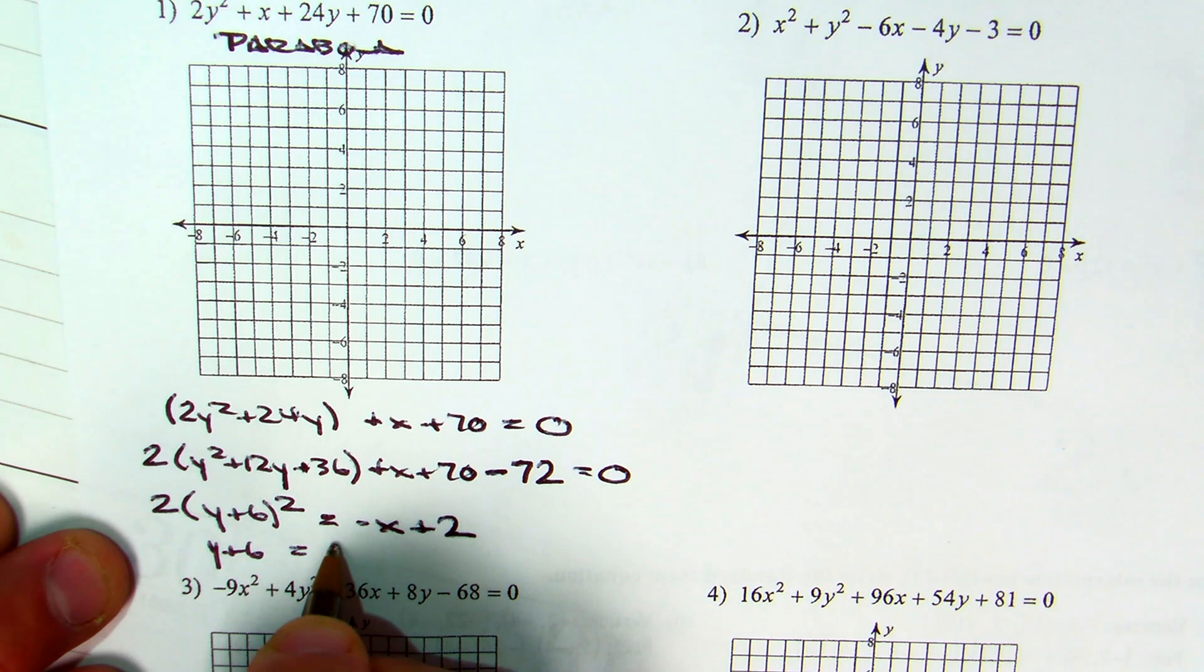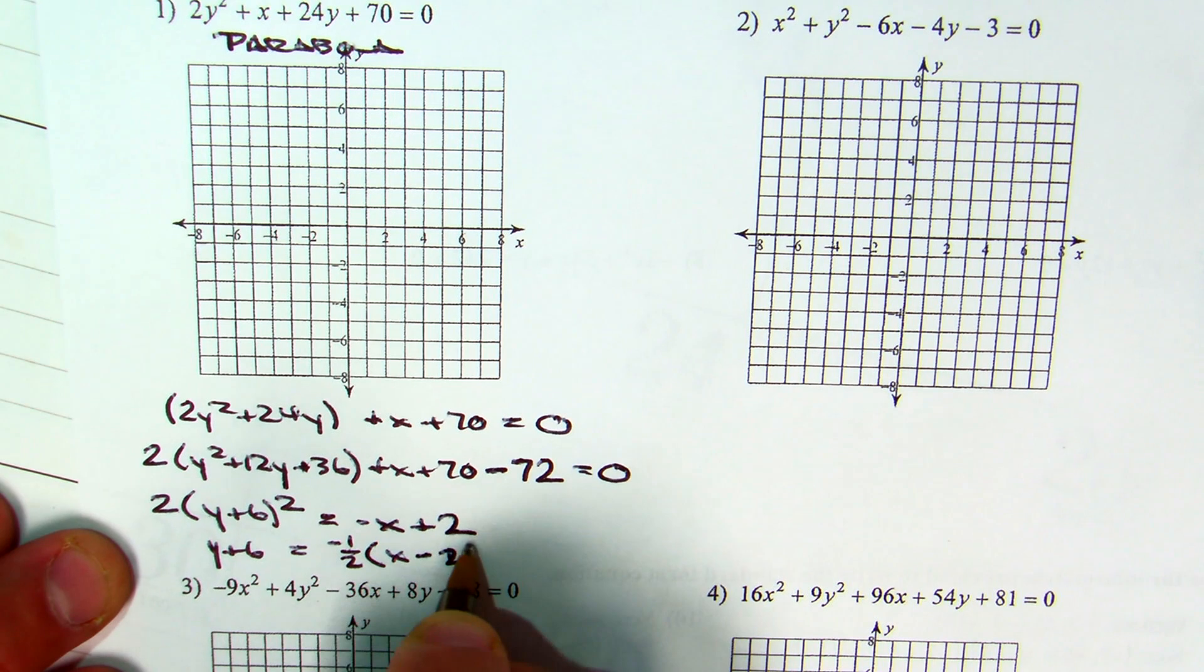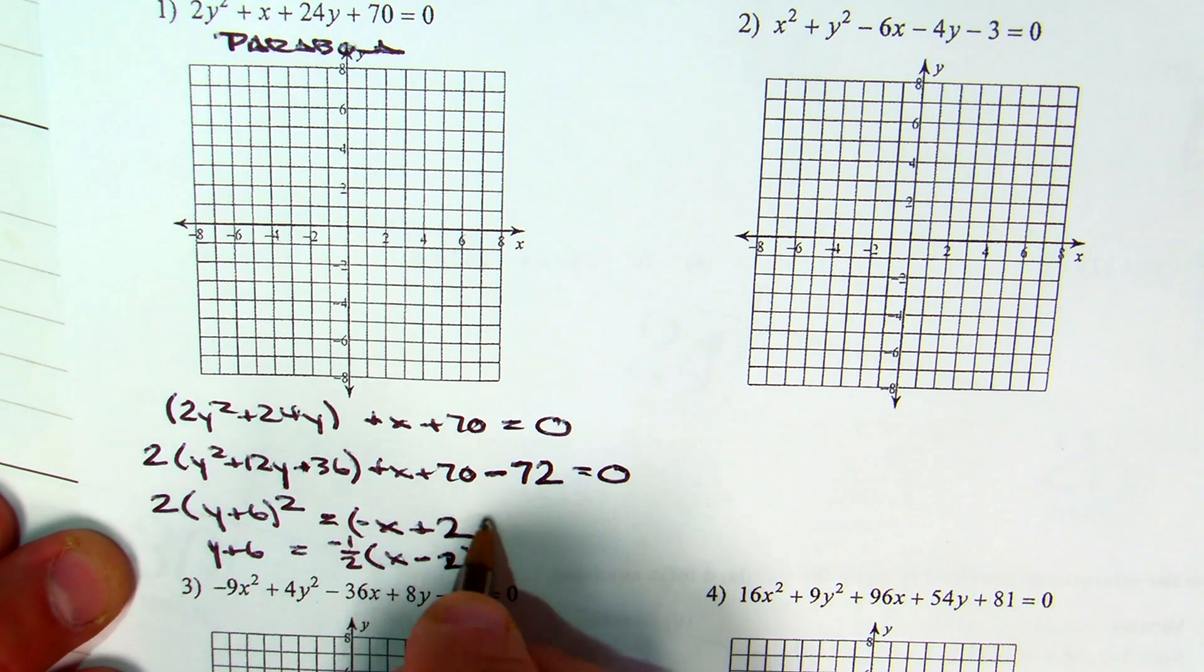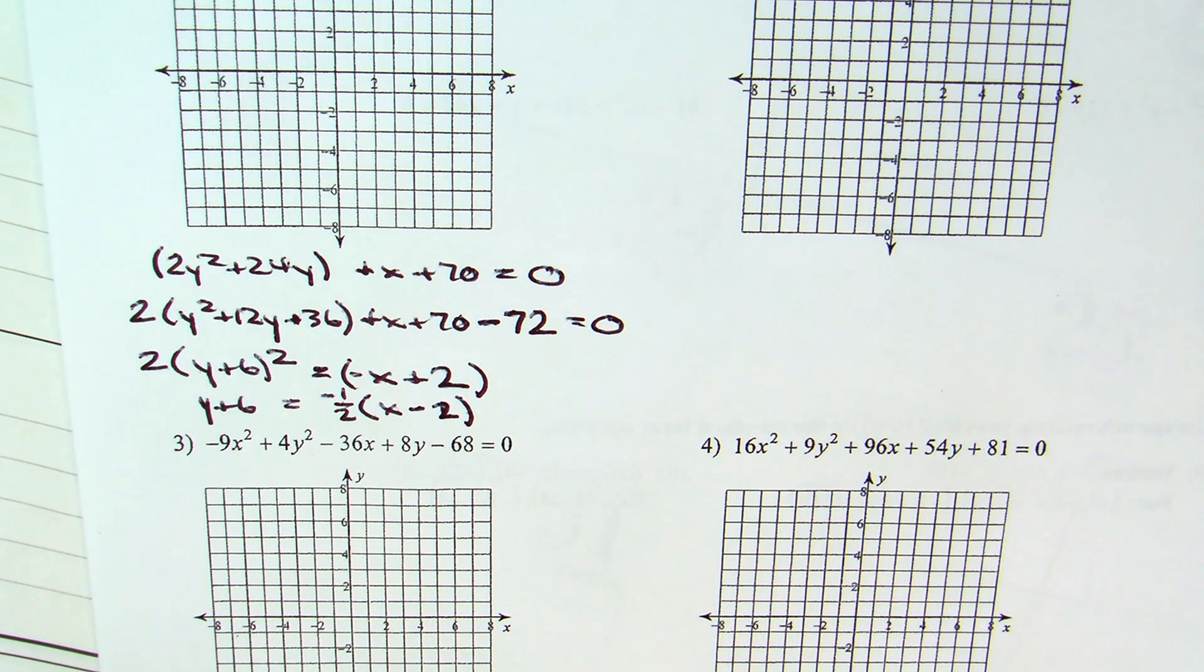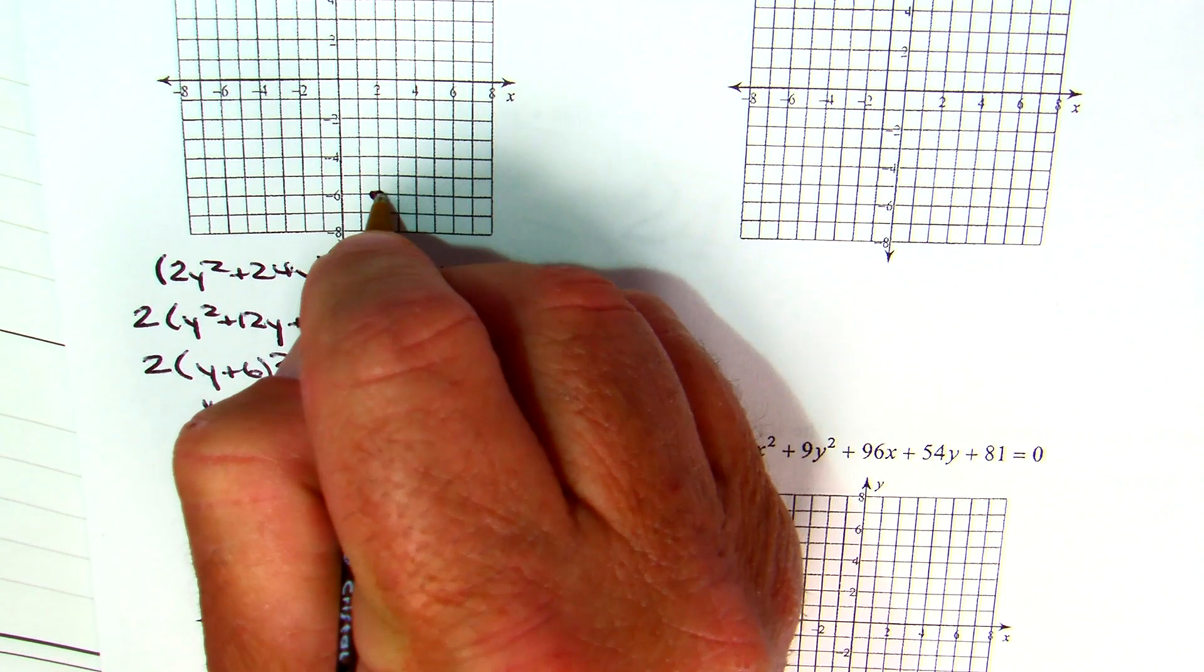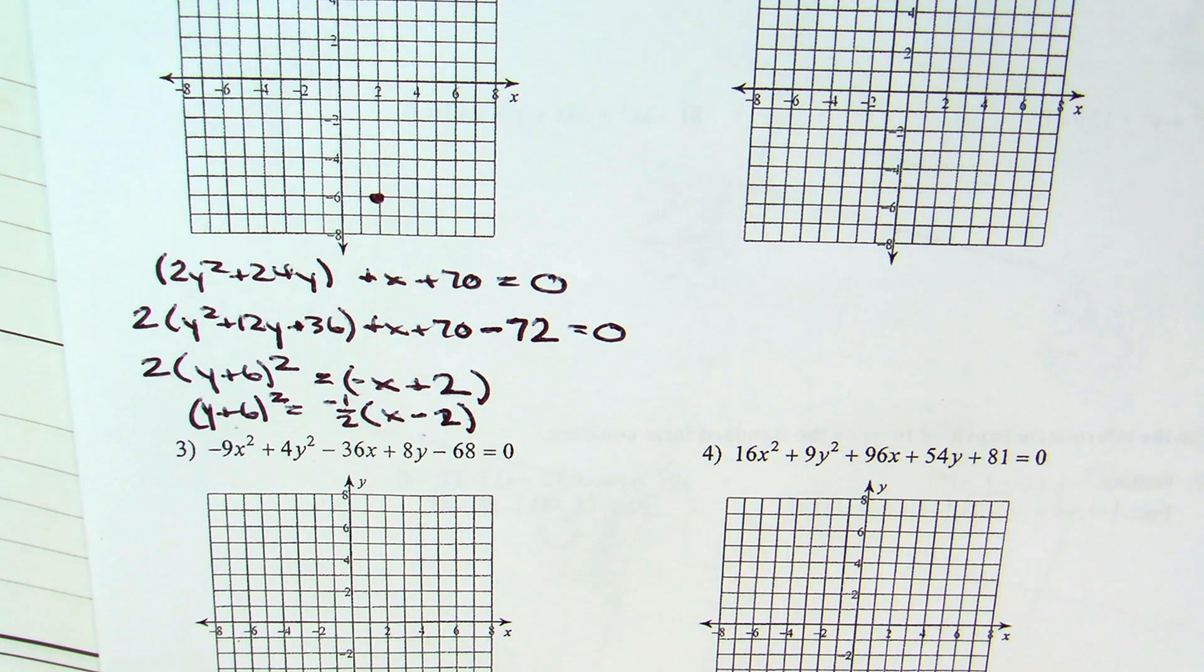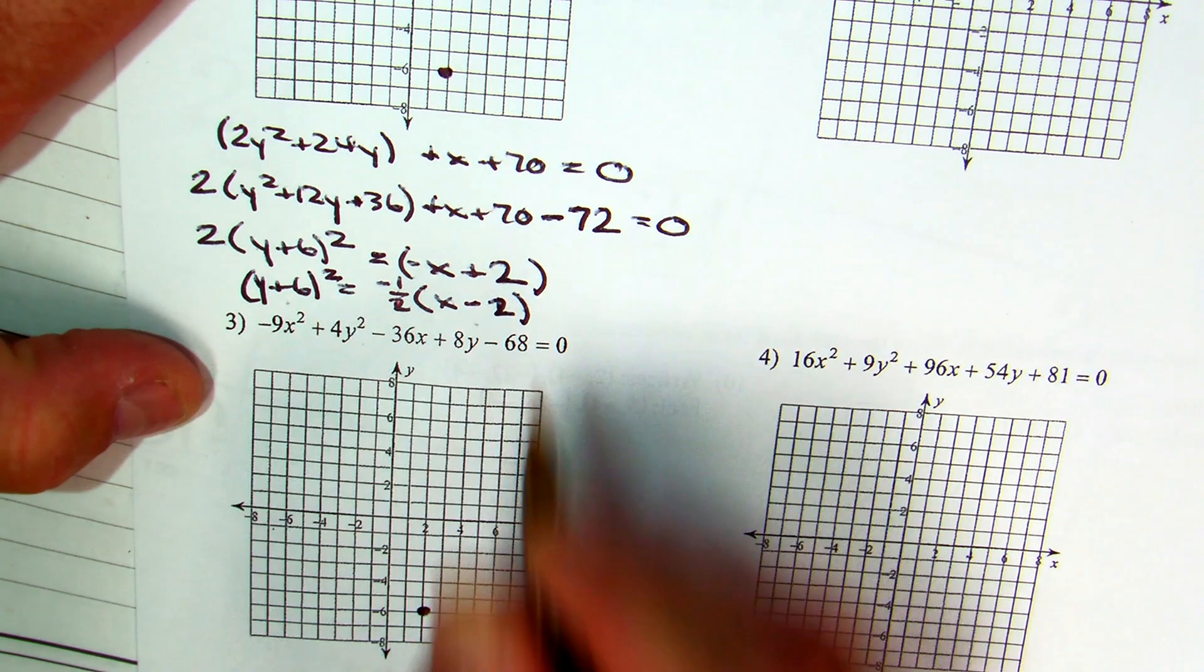So, I'm going to divide both sides by 2 and I'm going to pull the negative out. Make sense so far? All right. What's my vertex based upon what I have? 2, negative 6. What part is squared? y. So, it's going to go left or right. However, it is negative. Oops. Got in the wrong spot.